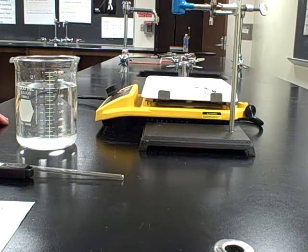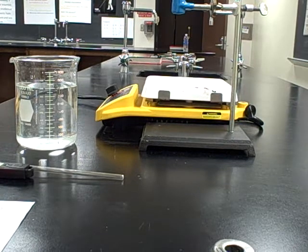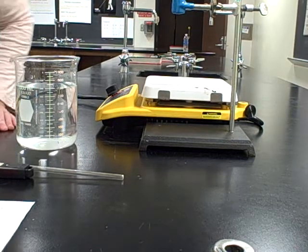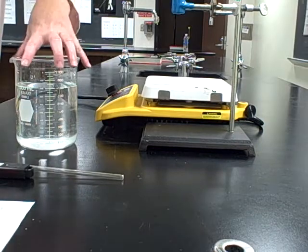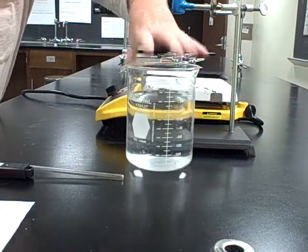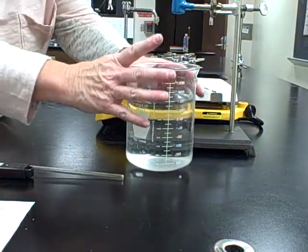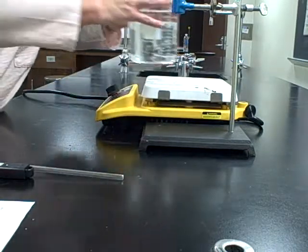The procedure says step one, fill your beaker about two-thirds full of water and make sure you can immerse the flask up to its neck without spilling water over. So here's my big beaker, about a thousand milliliter beaker. I filled it a little over 700, between 700 and 800.